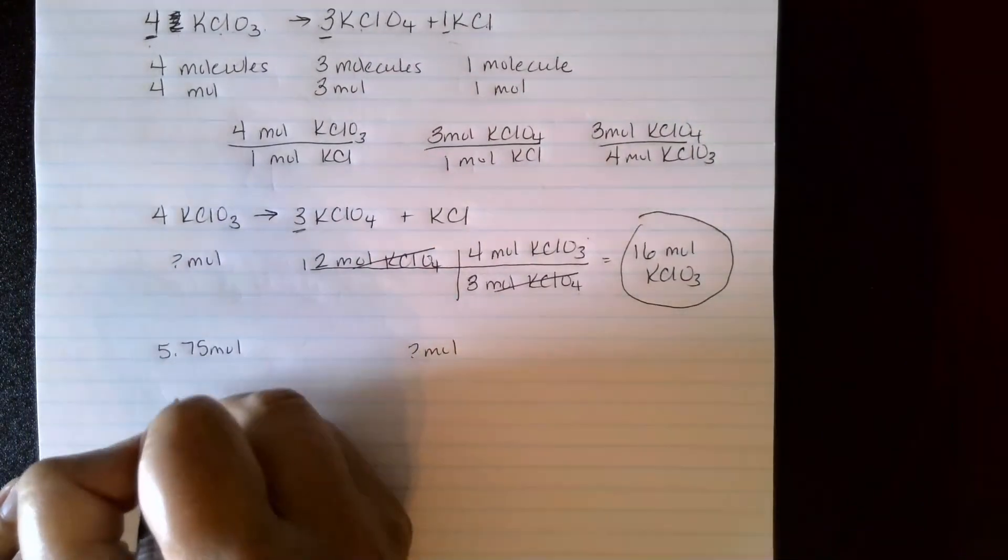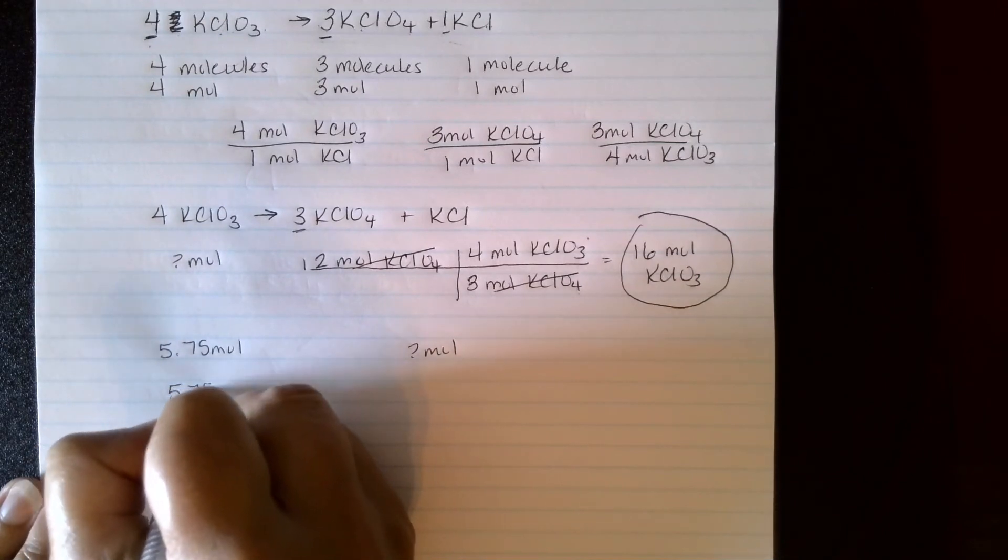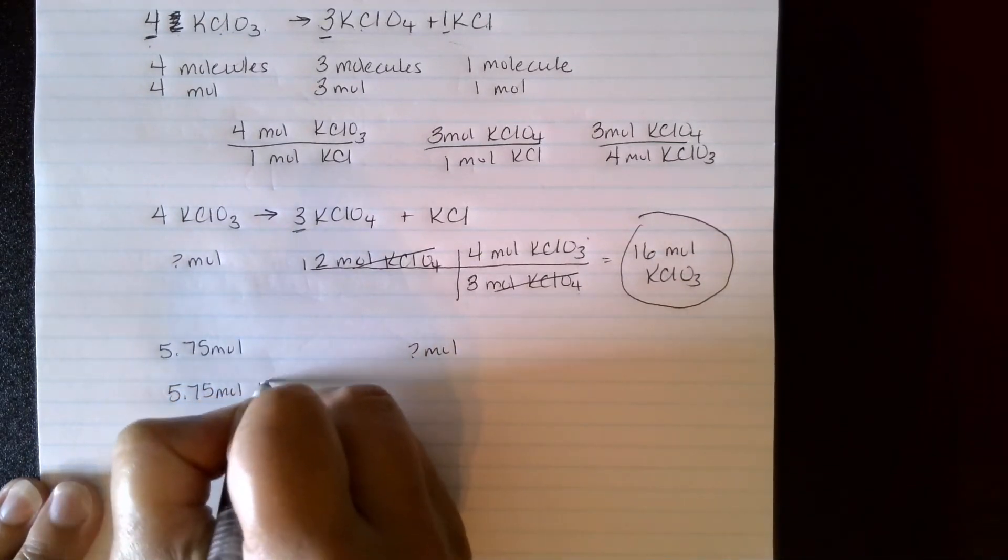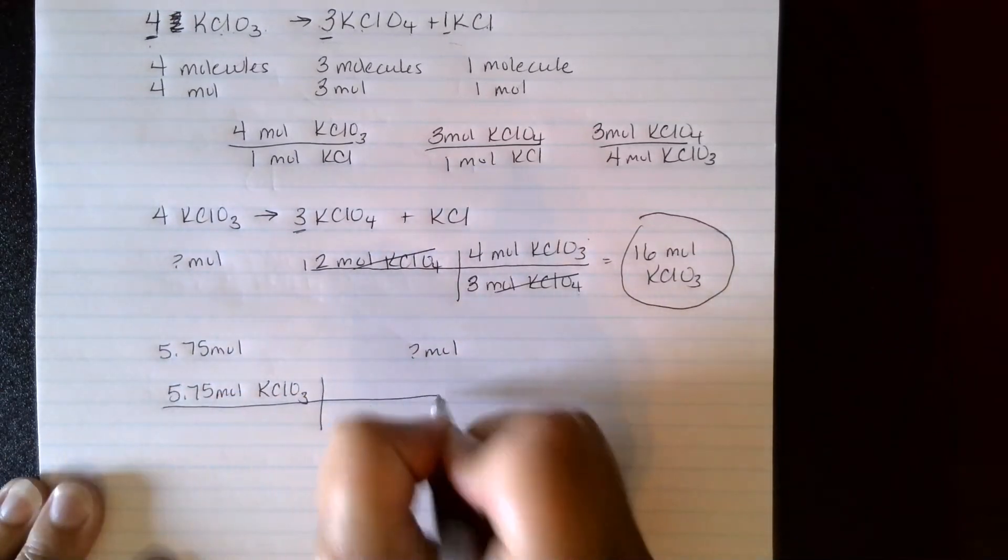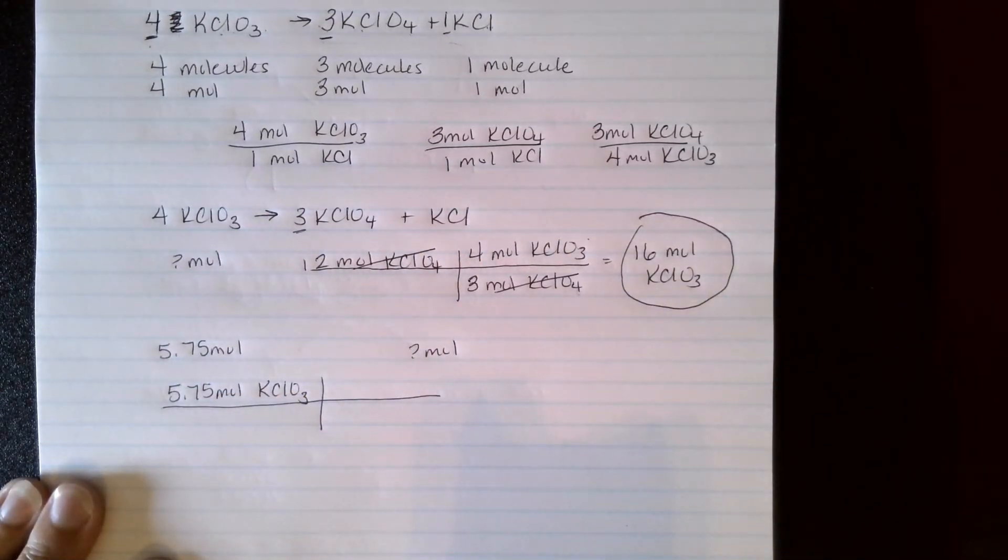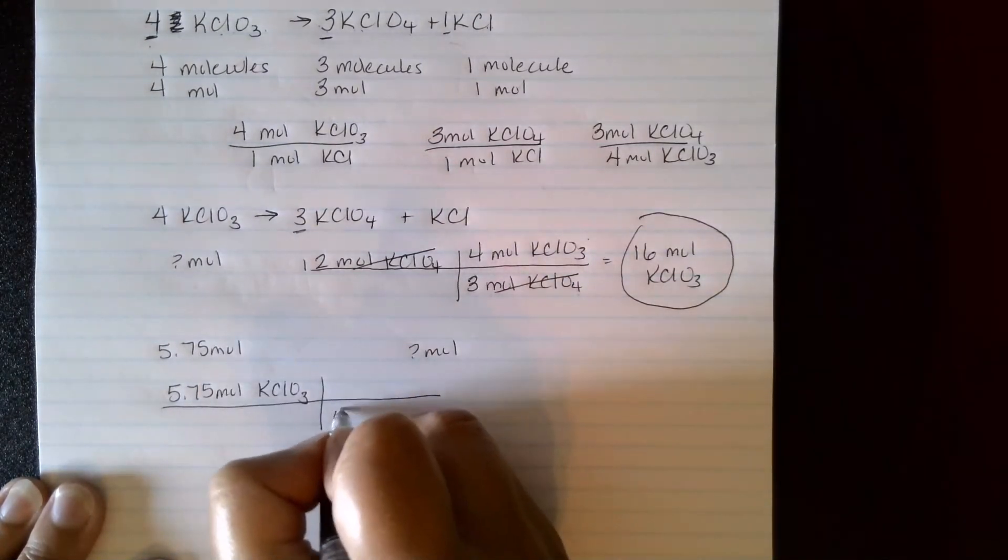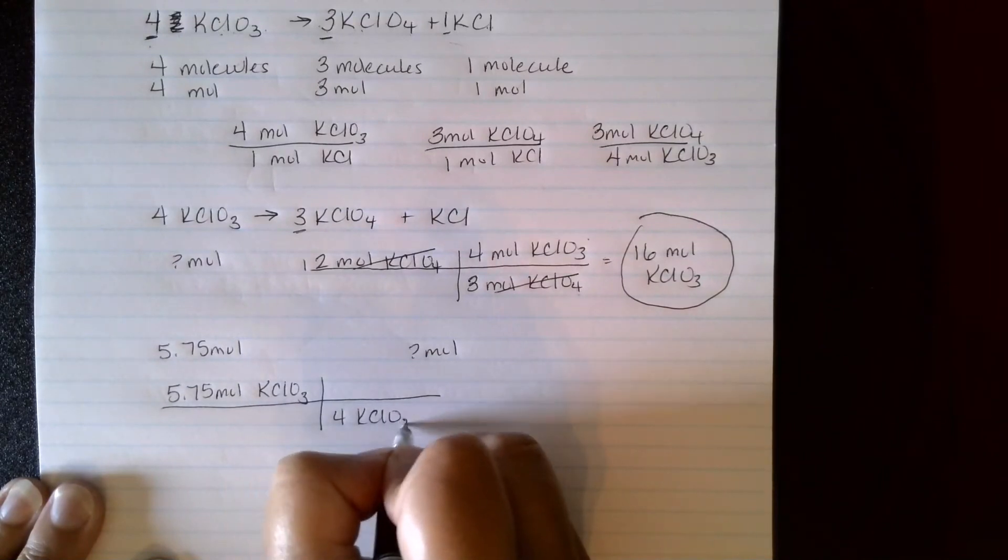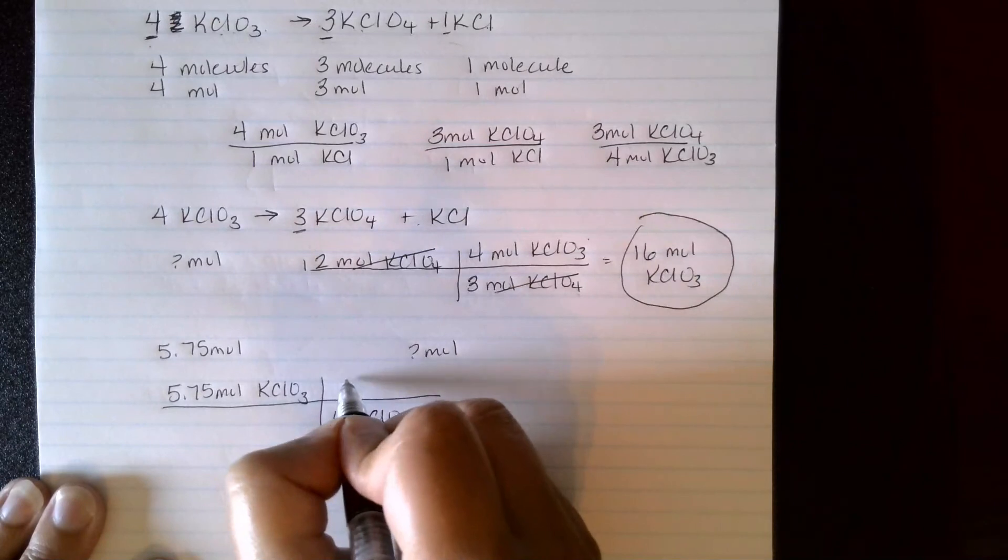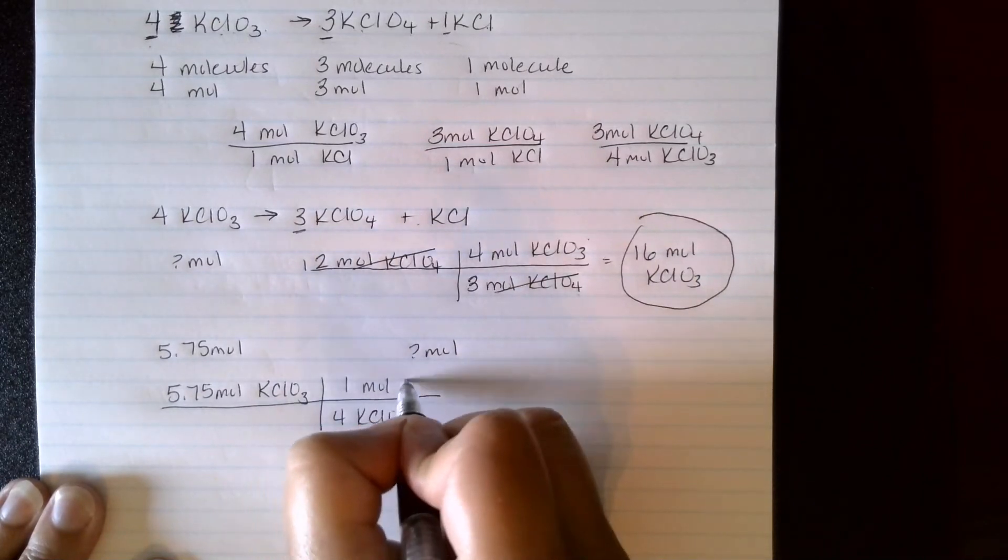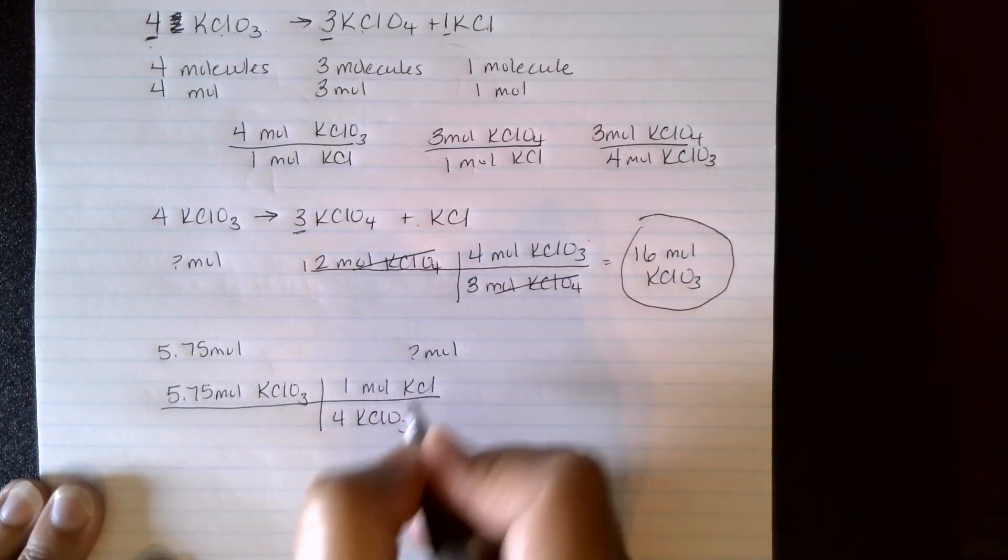So if I have 5.75 moles of the KClO3, the KClO3 has to go on the bottom, and I have 4 of the KClO3. I'm trying to find the KCl, and it has a 1. So what I want over what I got.